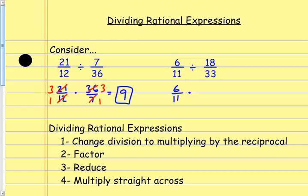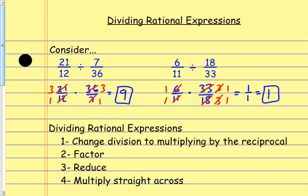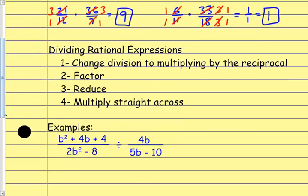Same thing with this one — dividing by a fraction is the same as multiplying by the reciprocal. From here I do any reducing I can: this reduces to a 1 and a 3, this reduces to a 3 and a 1, and the 3 over 3 reduces to 1 over 1. So I've got 1 times 1 which is 1, giving me 1 over 1, which is 1. When dealing with fractions, I change division to multiplying by the reciprocal and treat it like any other multiplication problem.